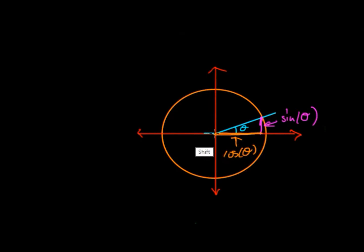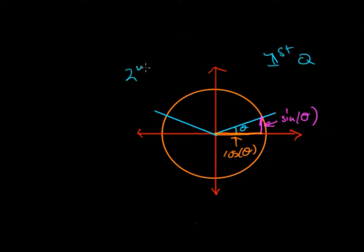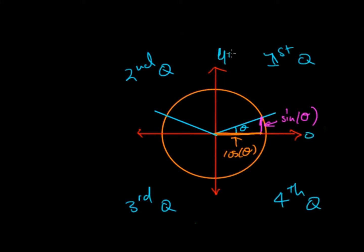If we take a line in the second quadrant — so this is the first quadrant, this is the second quadrant, then the third, and then the fourth — we note that that is angle zero, that's 90 degrees, that's 180 degrees, that's 270 degrees, and then back to zero or 360.